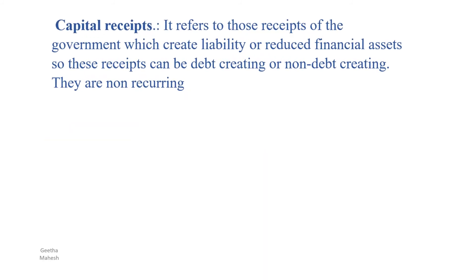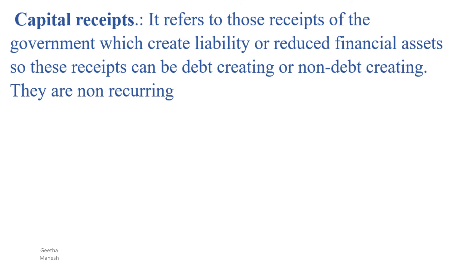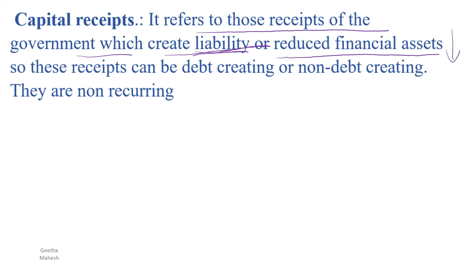What are capital receipts? Capital receipts are those receipts of the government which create a liability or reduce the government's assets — such as financial assets or property. That is why we include them in capital receipts. Capital receipts can be debt-creating, like loans, or non-debt-creating, like sale of assets, where assets reduce but no debt is created.